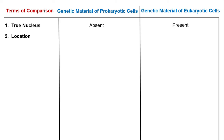The second point of difference is location. Since the nucleus is absent in prokaryotic cells, the genetic material is free-floating in the cytoplasm and is located in a region called the nucleoid — the region in the center of the cell which contains genetic material in any prokaryotic cell.